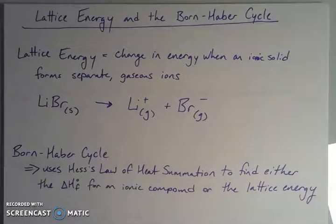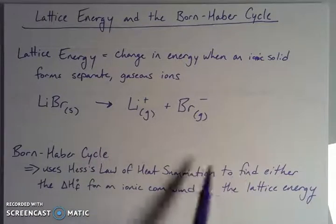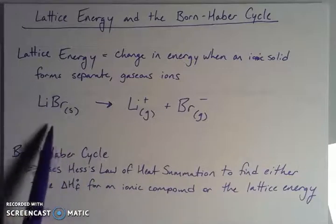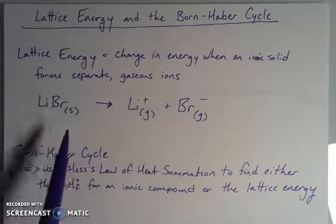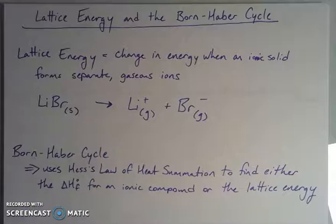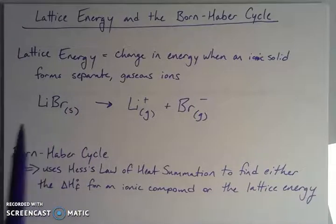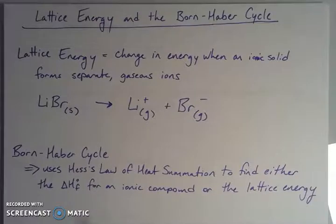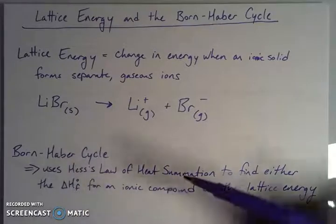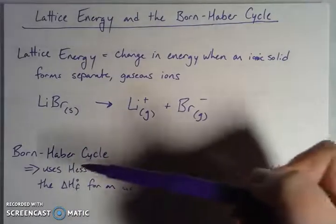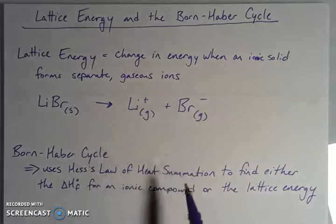When they form this compound, energy will be released. Or if I look at it the way I've written here, if I have a solid ionic compound, if I wanted to break it apart into its component ions, I would have to put energy in to make that happen. That energy that I would put in to break it apart is called the lattice energy. If I was forming that solid from these ions, that would be the negative lattice energy.